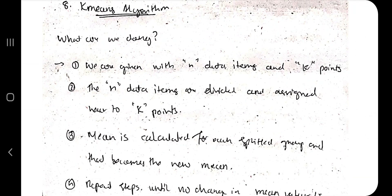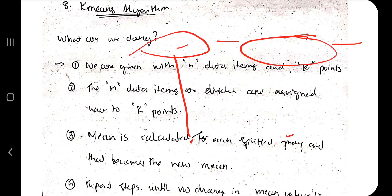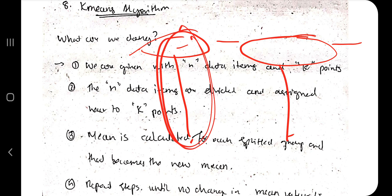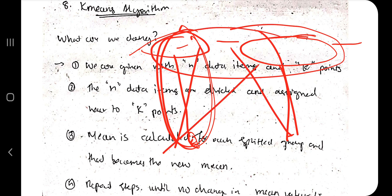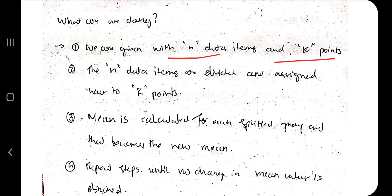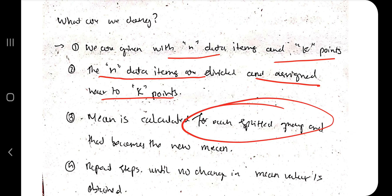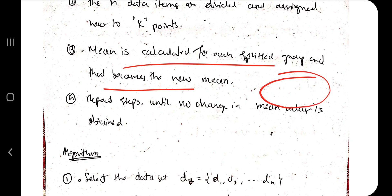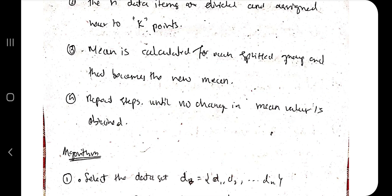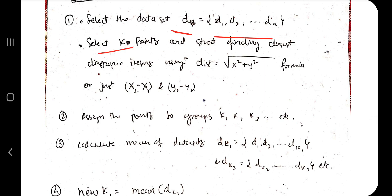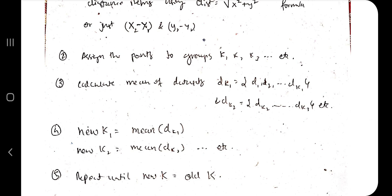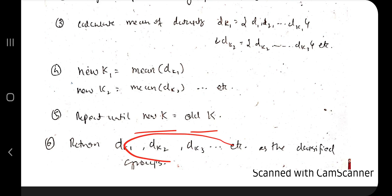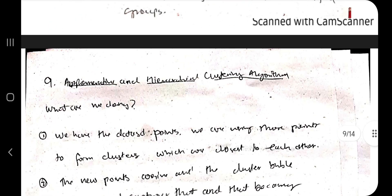The K-Means Algorithm is very important from an exam standpoint. Given n data items and k initial points, each data item is assigned to the nearest k point. Then the mean is calculated for each group, becoming the new centroid. Repeat — assign all points to the nearest centroid, recalculate the mean — until the mean values no longer change. The final groups are the resulting clusters.